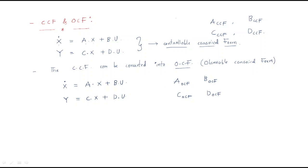There is a relation between the Observable Canonical Form and the Controllable Canonical Form. The Observable Canonical Form matrix A is represented as the Controllable Canonical Form A raised to the power of transpose. Transposition means rows become columns and columns become rows, with the same degree of the matrix. This gives us the Observable Canonical Form A matrix.